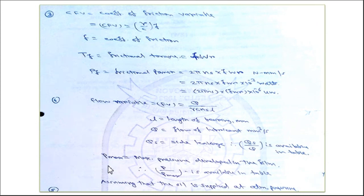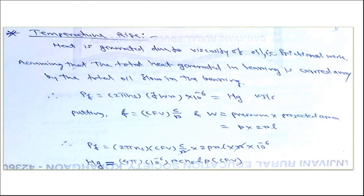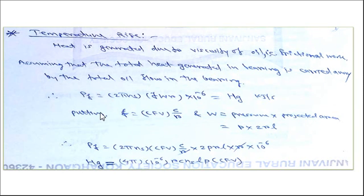To find the temperature rise of the bearing, we assume that all heat generated by viscous friction is carried away by the total oil flow. Heat generated equals the frictional power Pf = 2πns·f·W·R × 10⁻⁶ kJ/s. Substituting f = (R/C)⁻¹·Cfv and W = p·2RL, the heat generated simplifies to: Hg = 4π × 10⁻⁶ · R·C·ns·L·p·Cfv.